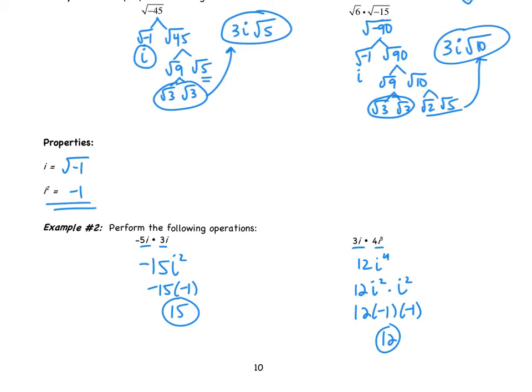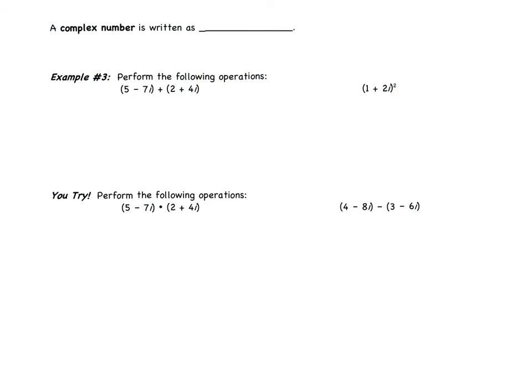We've got a few more things to talk about with imaginary numbers. Before we look at operations, we're going to talk about a complex number. An imaginary number has an i in it. A complex number has a real part and an imaginary part. A complex number is written as A plus B I. That A is a real number. B is the imaginary part.